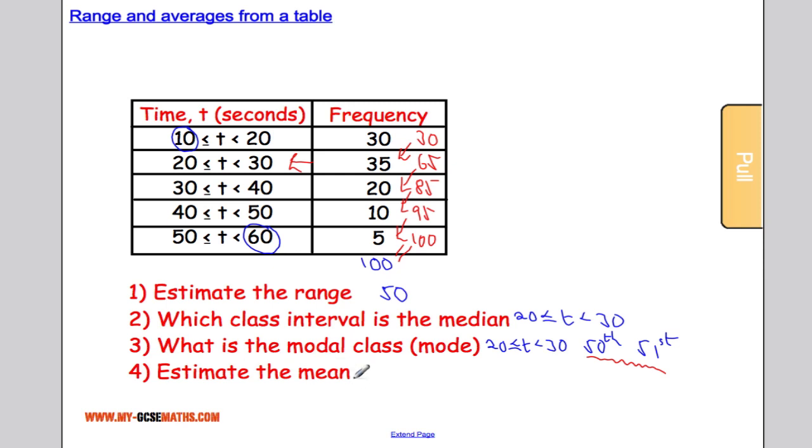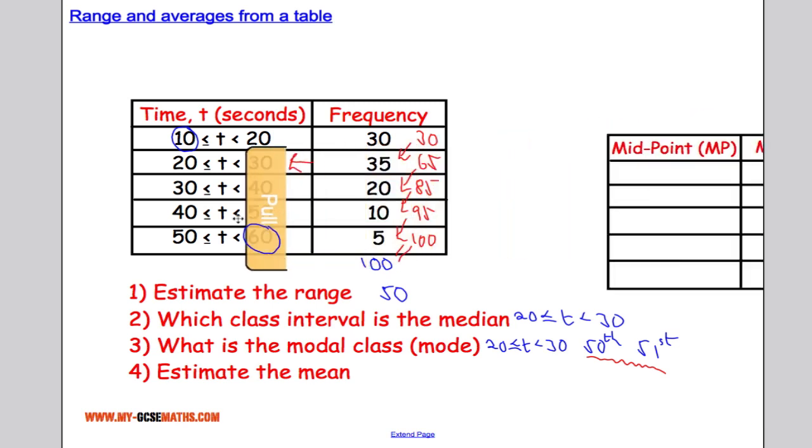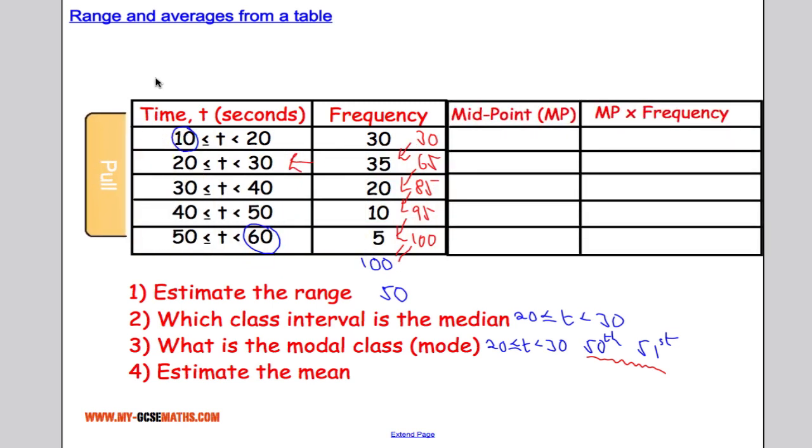And we want to estimate the median next. Now, in order to estimate the median, we're going to have to add in a couple of columns. So here we go. First thing we're going to do is we're going to work out the midpoint of all of these class intervals. So let's work out the midpoint of all of these class intervals. We'll have 15 here, midpoint between 10 and 20. Midpoint here is 25, 35, 45 and 55. So there's all our midpoints.